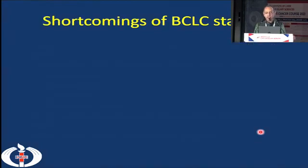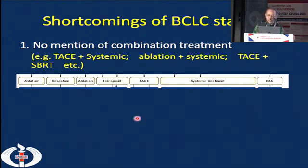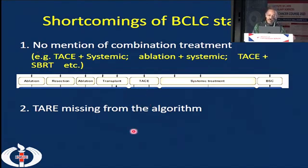But there are certain shortcomings of BCLC staging. One of the most important is that we are now using combination treatment more and more, but the BCLC algorithm has no mention of combination treatment. We often use TACE plus systemic therapy, ablation plus systemic therapy, TACE plus SBRT — but all these combination treatments are not there. A second shortcoming is that TARE is missing from the algorithm. They have mentioned TACE for intermediate stage tumors, but TARE is missing.